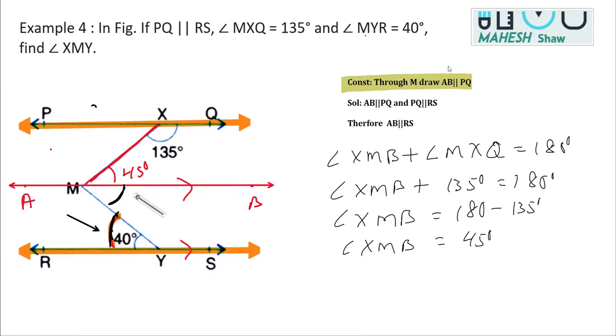So we can straight away write here that angle BMY is equal to 40 degrees, and that is from alternate interior angles. These were supplementary from the co-interior angle, and these are from alternate interior angles. Now, if we know the value of this angle as 40 degrees and that is 45...